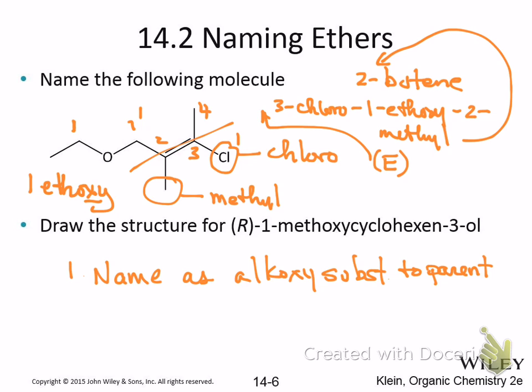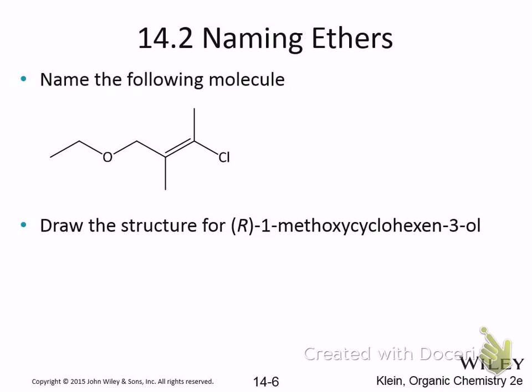So let's do R-1-methoxycyclohexene-3-ol. Let me clear the slide and break the name down first. It's cyclohexene — so it's got a double bond on it. And it has a 3-ol, which means it has an alcohol functional group. And it's got a 1-methoxy, and it's in the R configuration. There's something weird about this name — I'm trying to figure it out in my head.